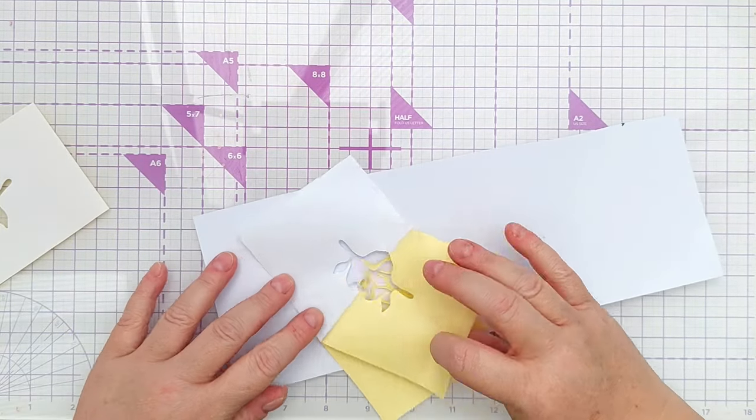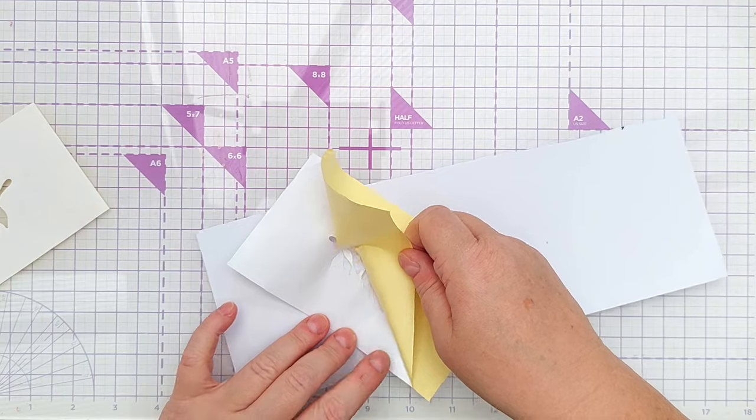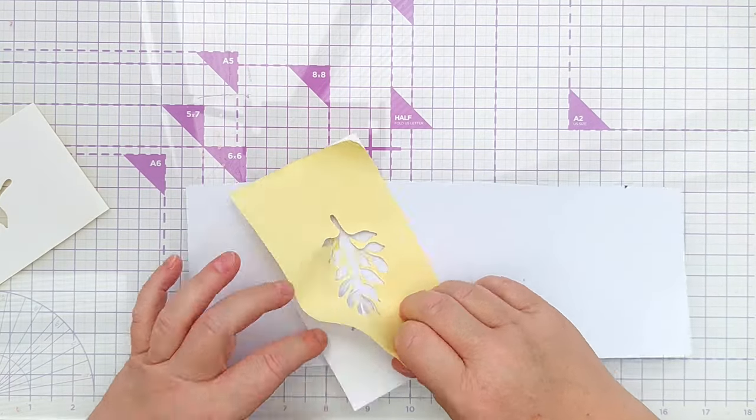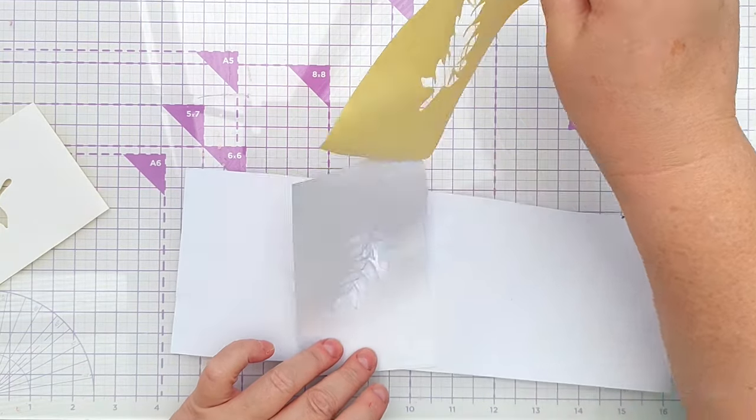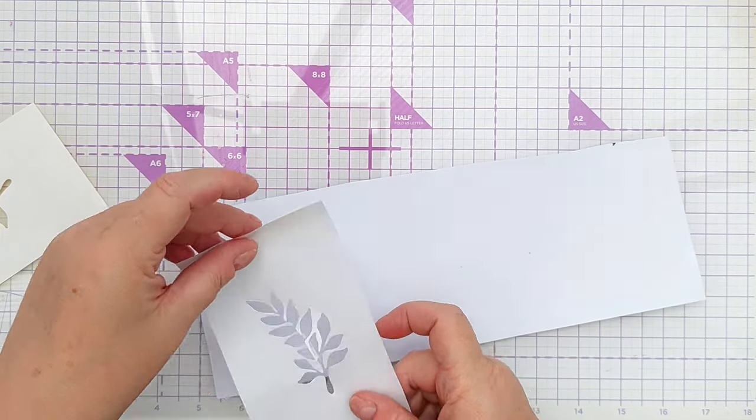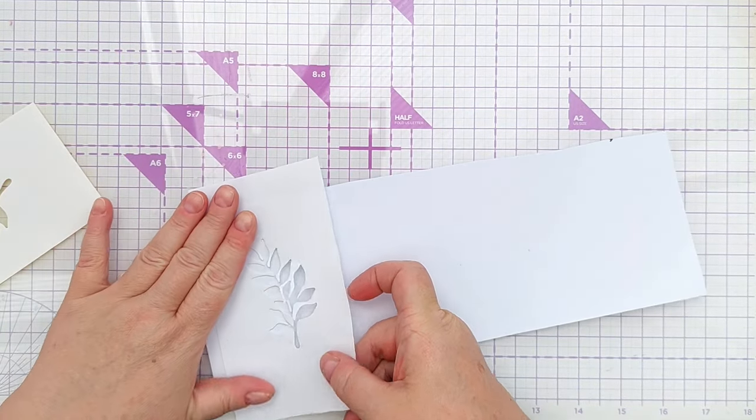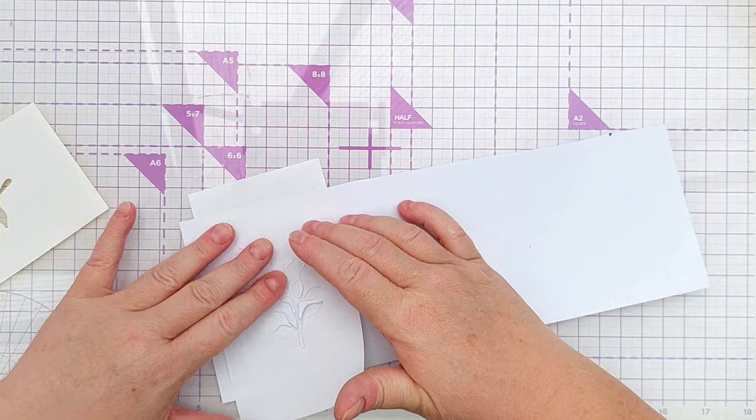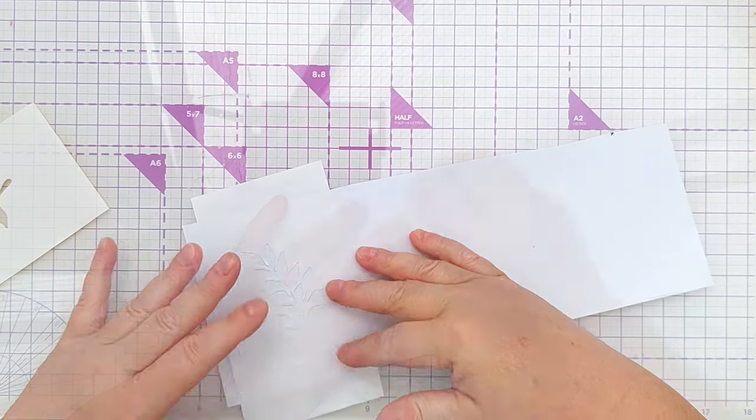The masking paper is a very low tack self-adhesive paper that you can use to mask off areas of your card and you can make all sorts of shapes with it. You can tear it, you can die cut from it, you can use it as a straight edge, however you want to use it.